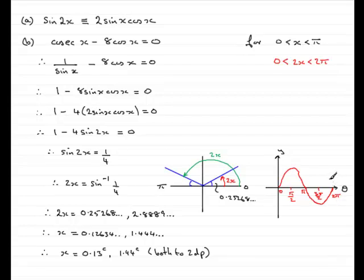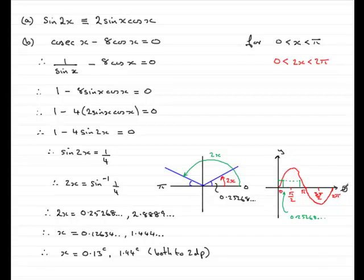If you're doing the graphical method, we have sin(2x) equals 1/4. Taking inverse sine on your calculator in radians gives 0.25268. If you look across at a quarter on the y-axis, you read down to get this first value. By symmetry you get a second intersection, and that second angle is pi minus 0.25268, giving 2.8889. I always prefer the quadrant method over the graphical method, but there you go.